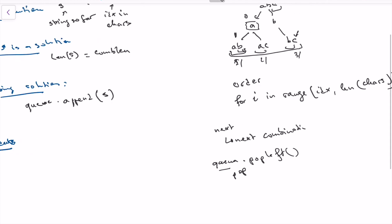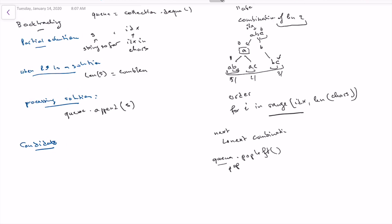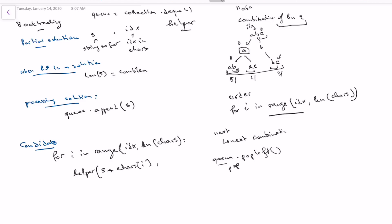For processing the candidates, we said we have this for loop to get the right order. So we do: for i in range of index to length of chars. Then we call our backtracking function — let's call it helper — again with the new string as s plus chars[i], and the index of the next character as i plus one, so that we don't repeat the character multiple times. That's pretty much all our backtracking solution needs.